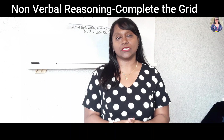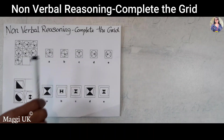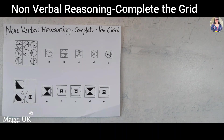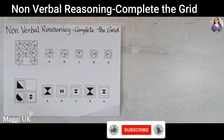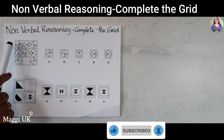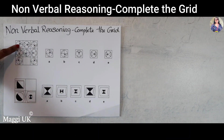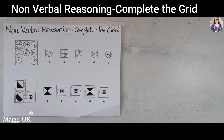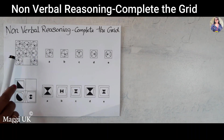Otherwise you will not get all my videos as your notification. Let's begin. So the non-verbal reasoning complete the grid — in this one we need to find out what completes the grid from the given shapes. They've given five shapes here and we need to find which one fits. If you see the first row and the dot here, it's turned 45 degrees clockwise, and the next one has again gone 45 degrees down.